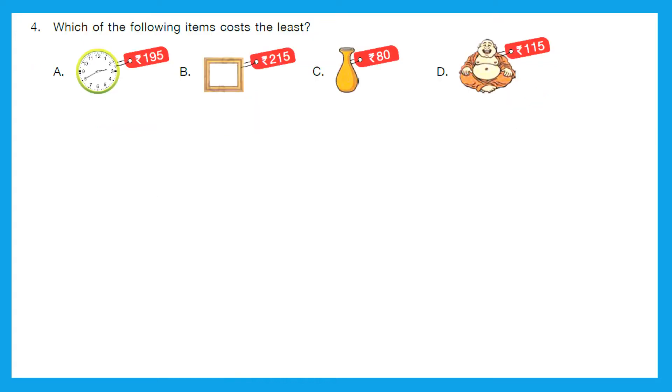Question 4: Which of the following items cost the least? Least means the minimum. So let's find the minimum or smallest number. Is it 195 or 215 or 80 or 115? So the smallest out of these four is option C, that is 80 rupees, and it is for a flower pot.